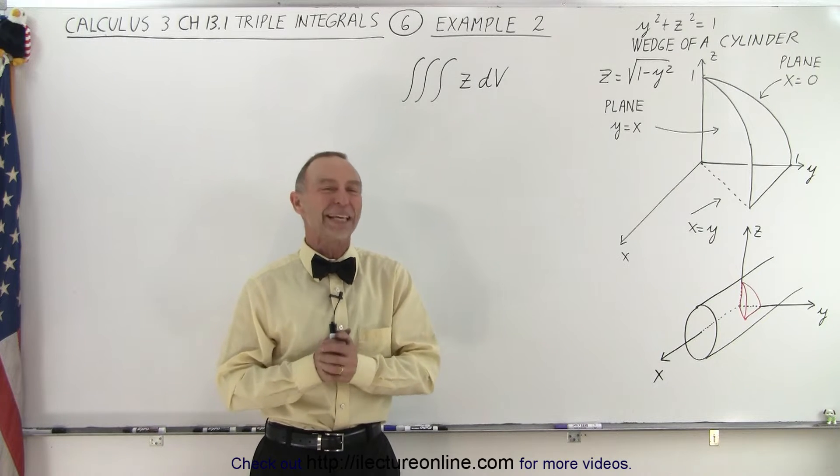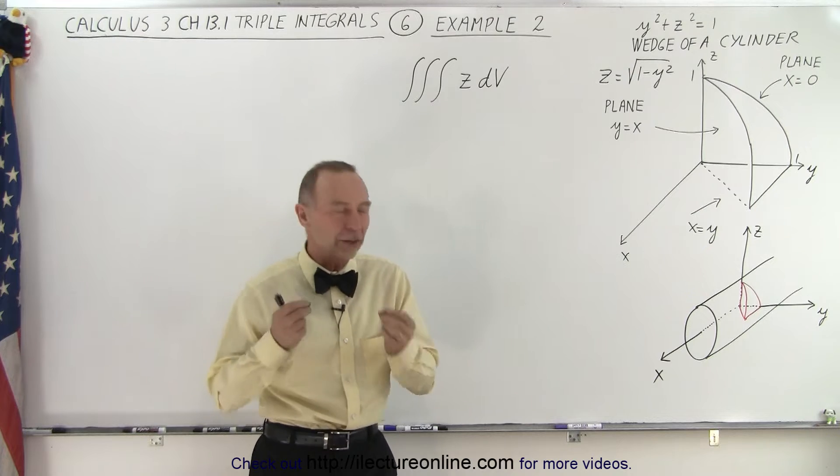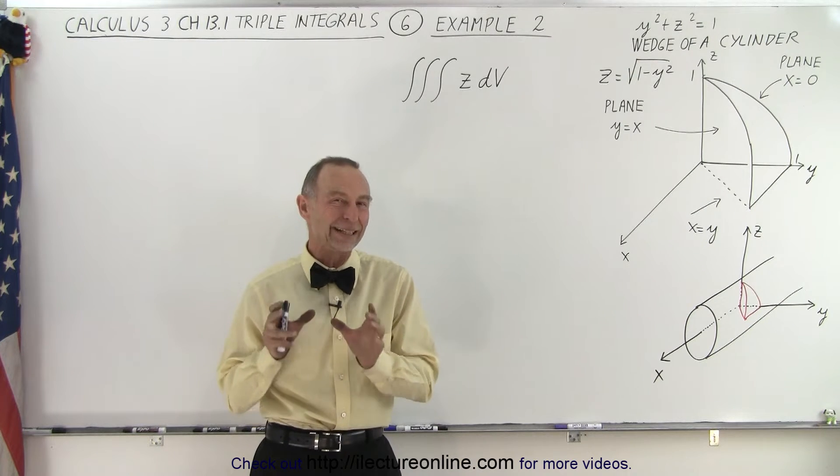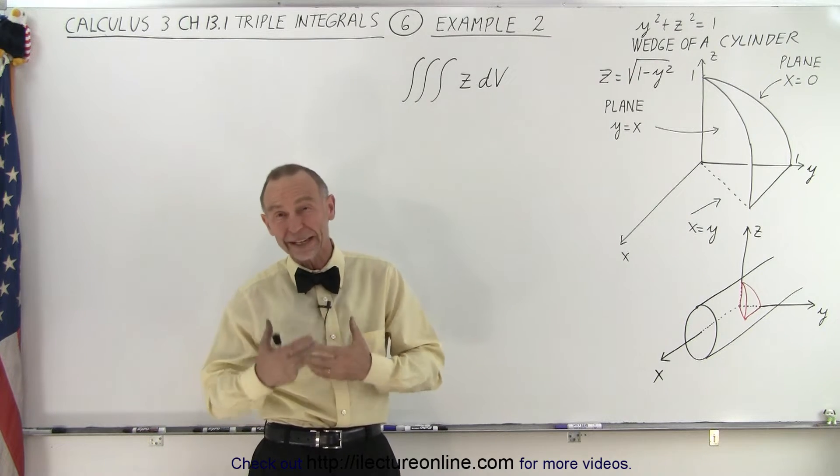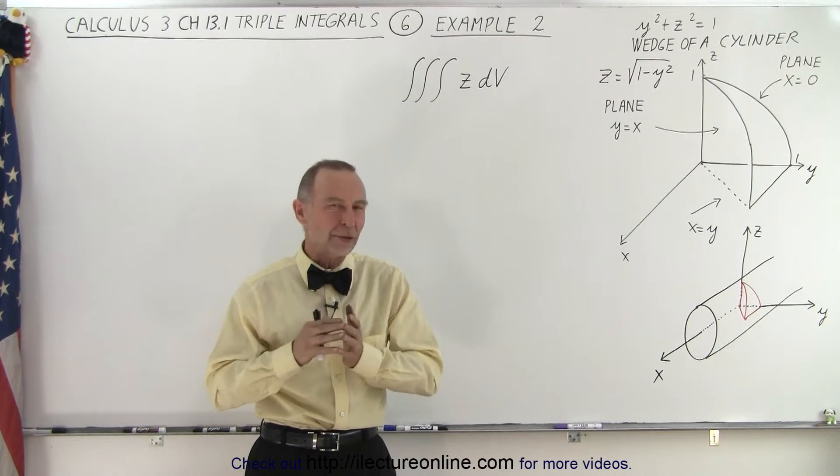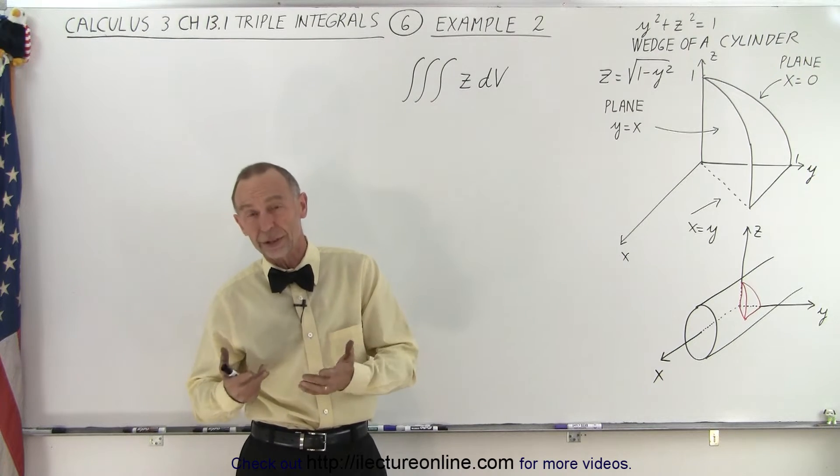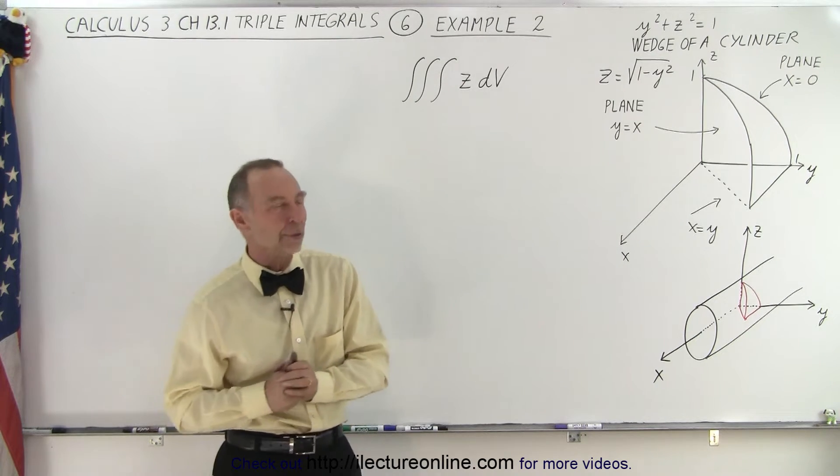Welcome to Electron Line. Here's our next example which is a little bit more complicated because the hardest part always is finding the limits of integration and finding the correct order sometimes. Again, correct order just simply means what's the easiest way to do it because you could essentially do it in any order if the limits of integration allow you.